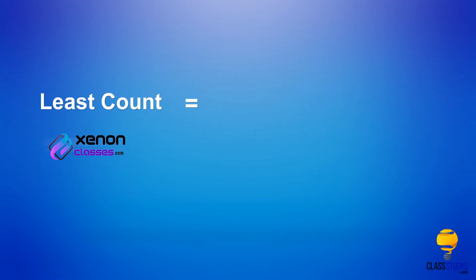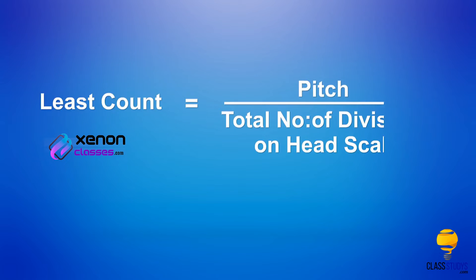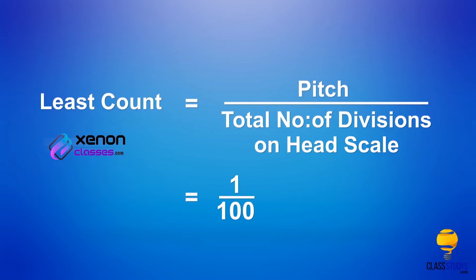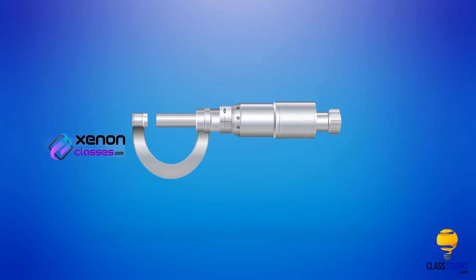The least count is equal to pitch divided by total number of divisions on the head scale, which is equal to 1 by 100, that is 0.01 mm. Now, check for the zero error.